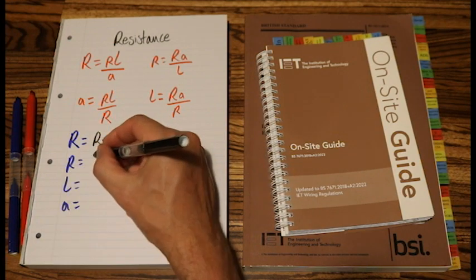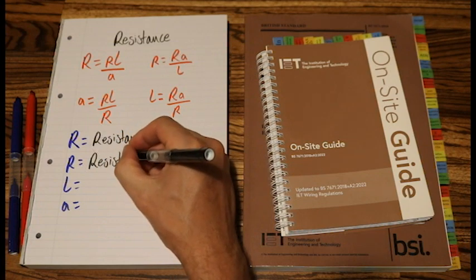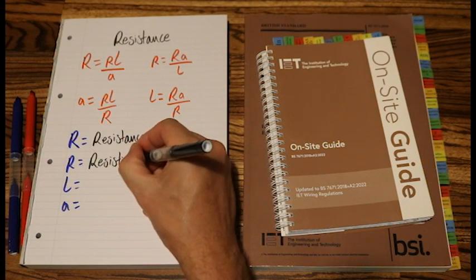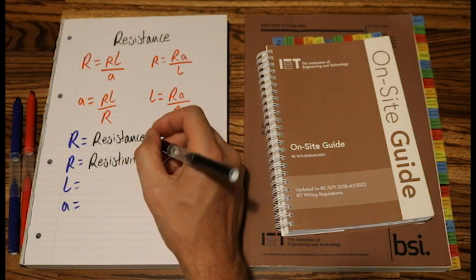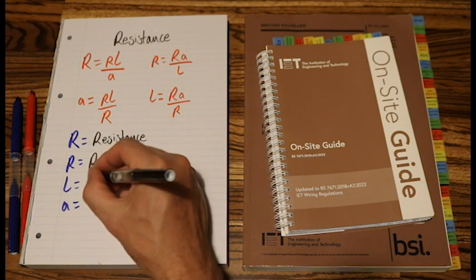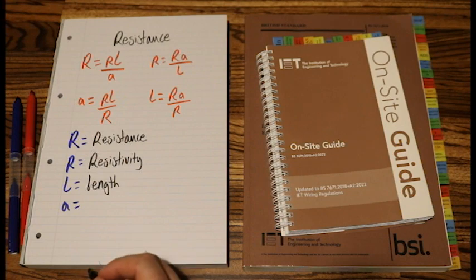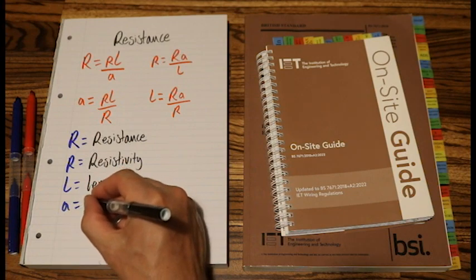And rho, this is resistivity. The resistivity will be a fixed number, dependent on the material that you are measuring the resistance of. And L is length. And A is area.